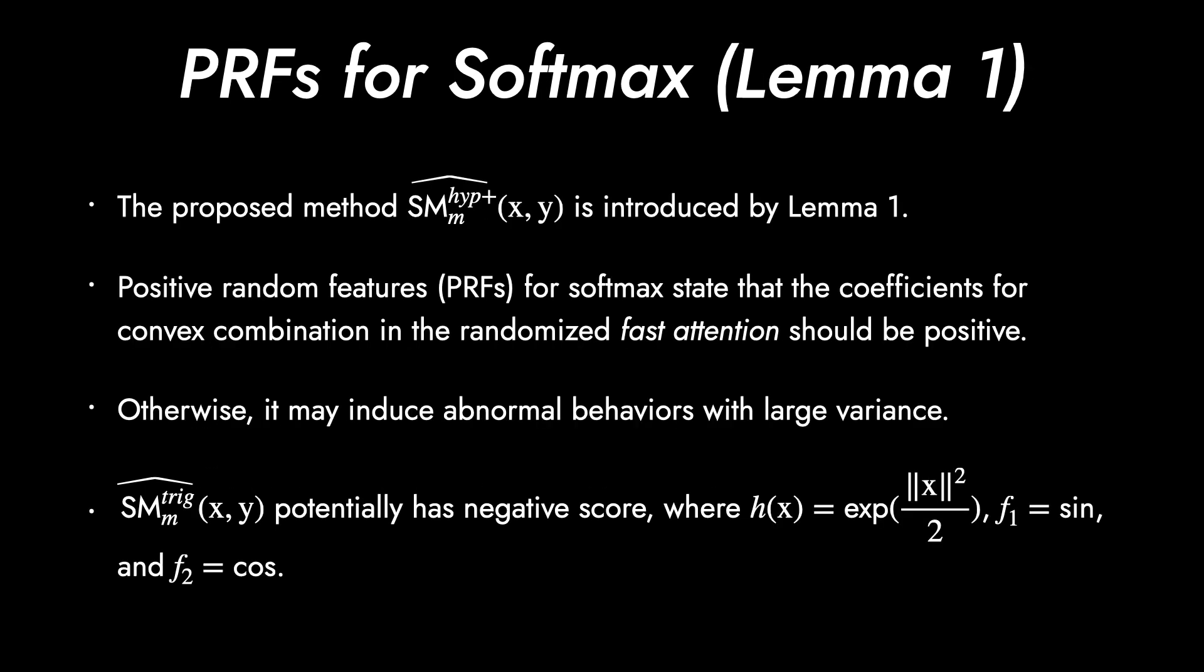Lemma 1 introduces the proposed method using hyperbolic cosine. They are saying that positive random features, which are presumably the output of dot product, should be positive for the convex combination in the randomized fast attention. If there are negative outputs, bad samplings may induce abnormal behaviors with large variance. For example, if we choose F1 and F2 as sine and cosine functions, it has potentially negative outputs.